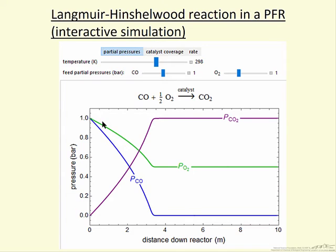The simulation also shows us the coverage on the catalyst of carbon monoxide and oxygen atoms as a function of distance down the reactor. Because their heats of adsorption are different, their competition for sites is such that carbon monoxide tends to have a higher coverage on the surface. Here we're plotting the rate of reaction as a function of distance down the reactor.